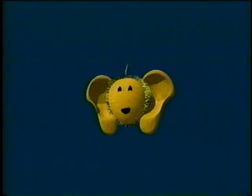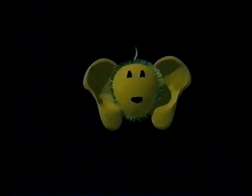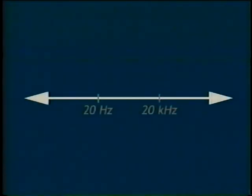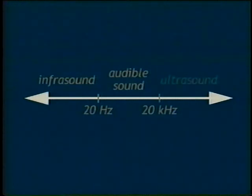The discussion has focused on the sound source. It's also important to understand the receiver of the sound. Sound waves travel through the air and interact with the human ear. Perfect human hearing lies in the range of approximately 20 to 20,000 hertz. Frequencies below 20 hertz and above 20 kilohertz are heard by other living creatures, but not by humans. 20 to 20,000 hertz is called the audible sound range.